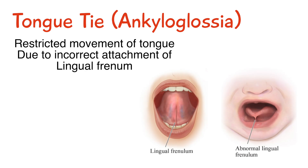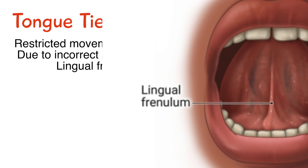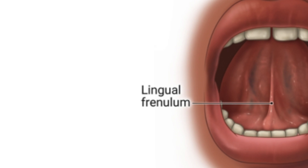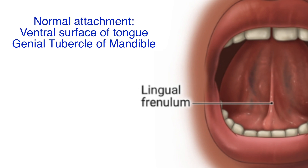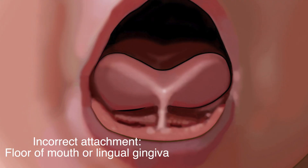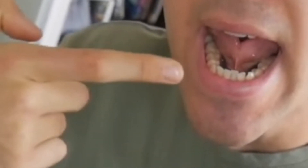A tongue tie is also known as ankyloglossia and it's a condition which restricts the movement of the tongue because of its attachment. In normal cases, the lingual frenum, which looks like this, is attached to the ventral surface of the tongue and the genial tubercles of the mandible. If the frenum attaches incorrectly to the tongue, it could be attached to the lingual gingiva or the floor of the mouth, which restricts movement of the tongue and leads to the condition known as being tongue tied.